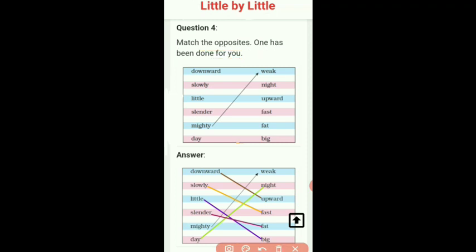So you may see here mighty is already done here and the meaning of mighty is takatwar and its opposite will be weak and the meaning of weak is kamzor.